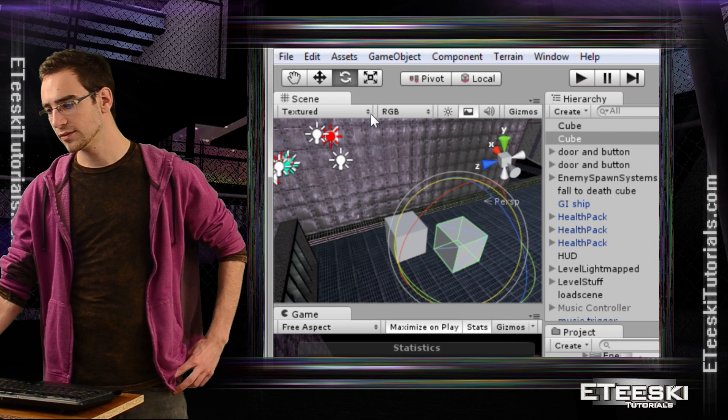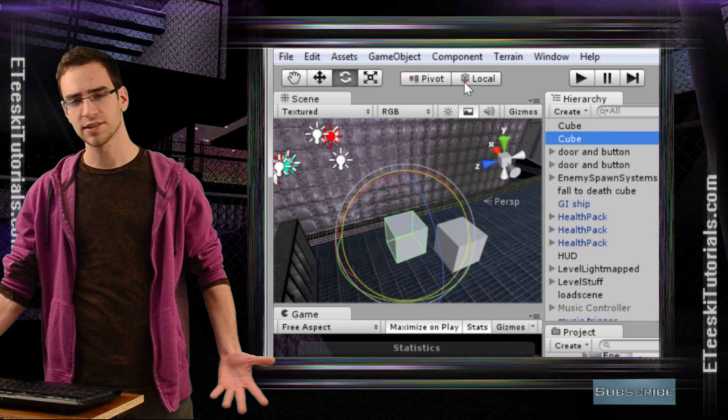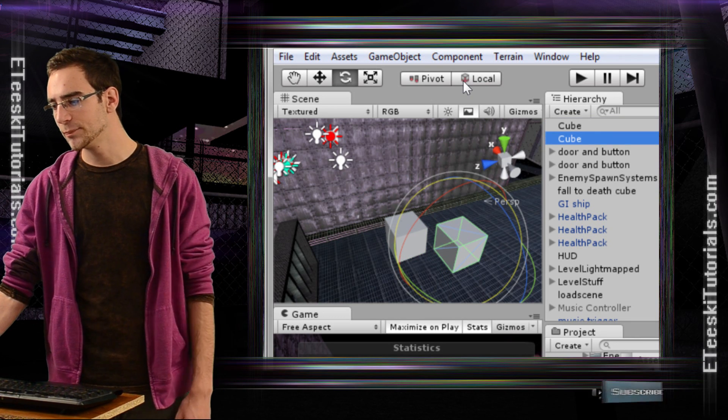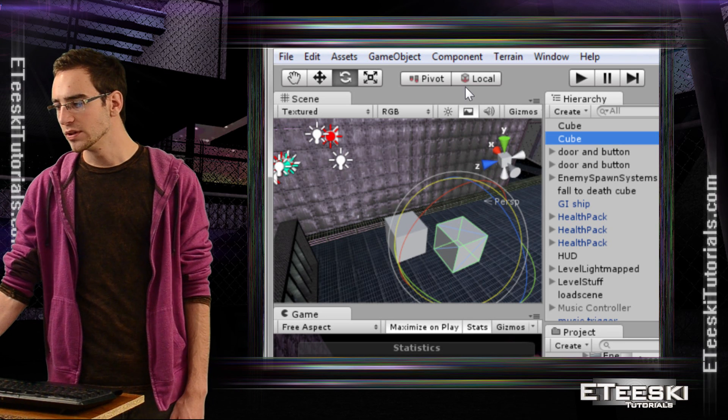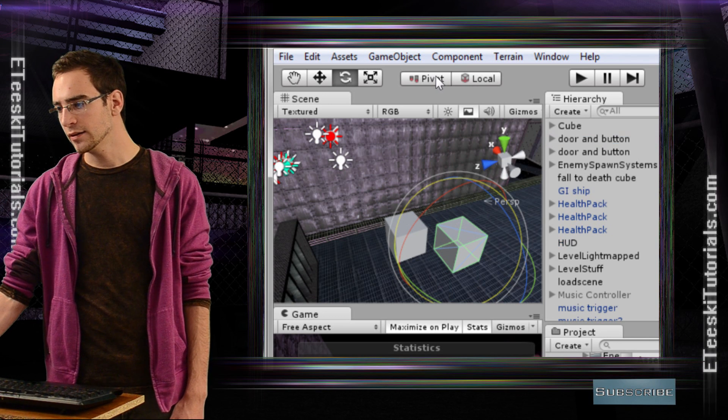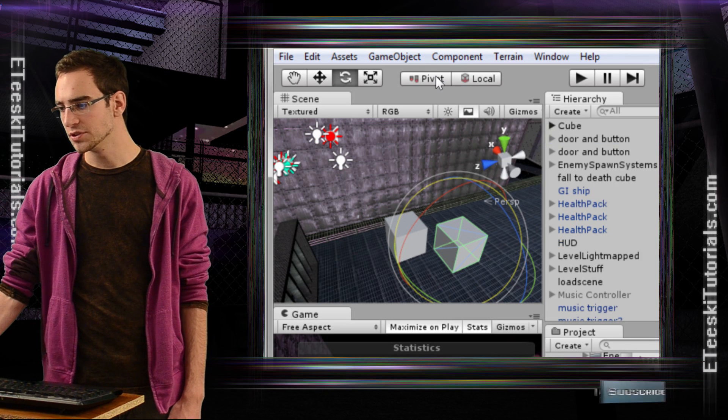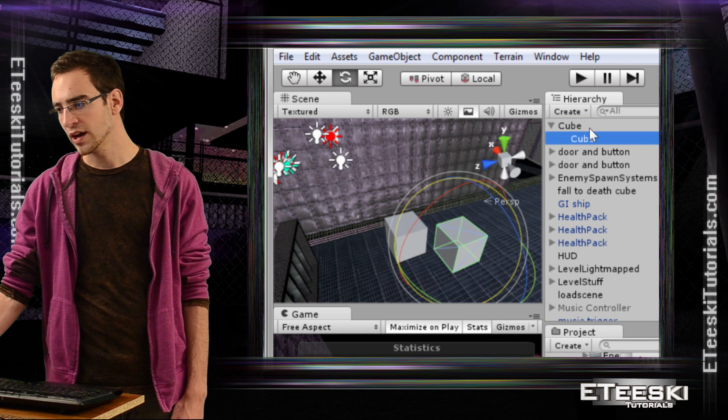To use as an example, I have two cubes next to each other. There's nothing special about these cubes. To make one of these cubes a child of the other cube, we just drag and drop it in the hierarchy over top of the other cube. And now as you can see, we got this little folder doohickey right here. So this cube is the parent and this cube is the child.